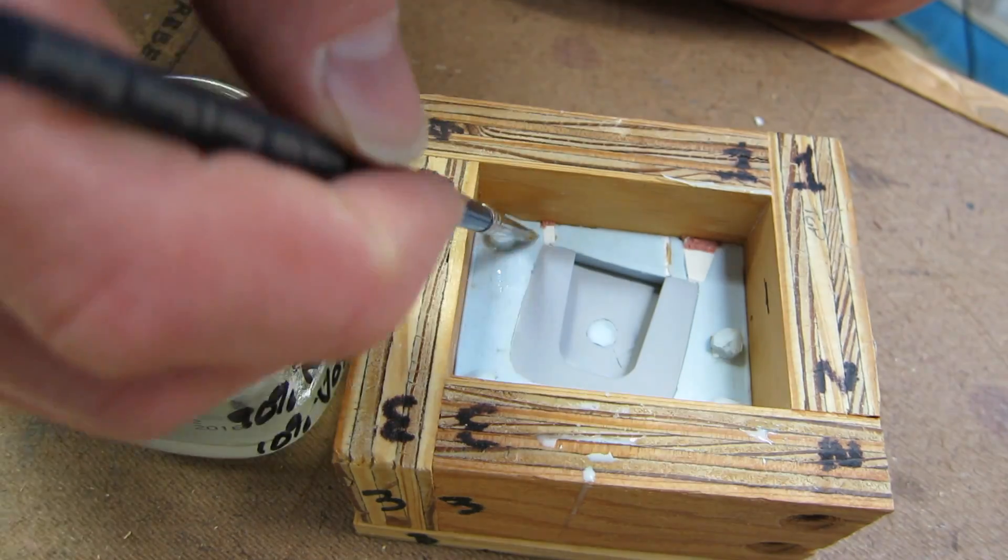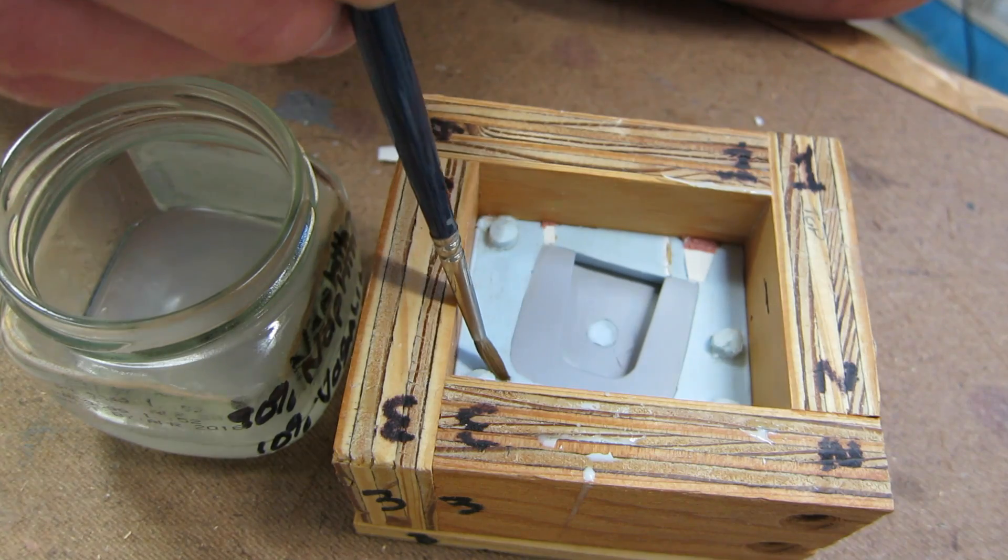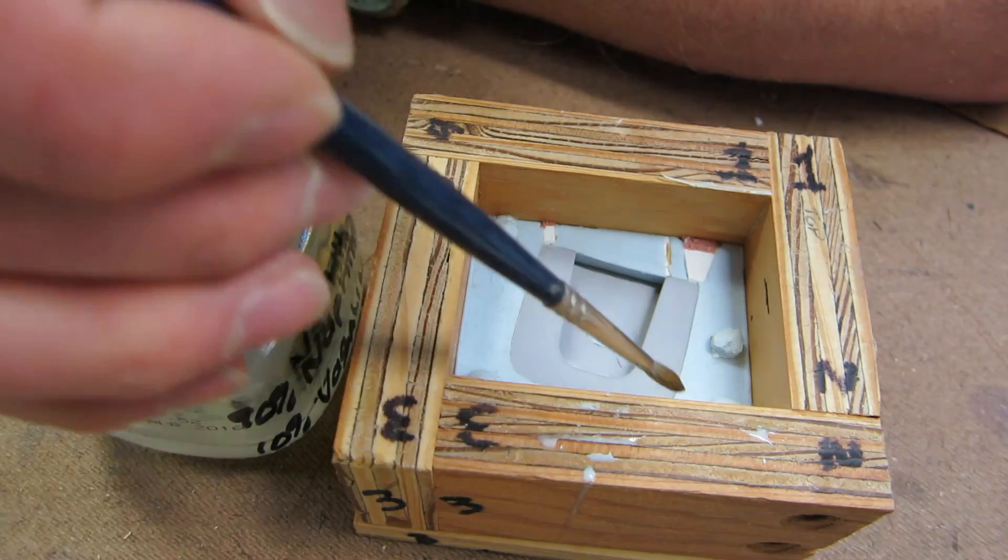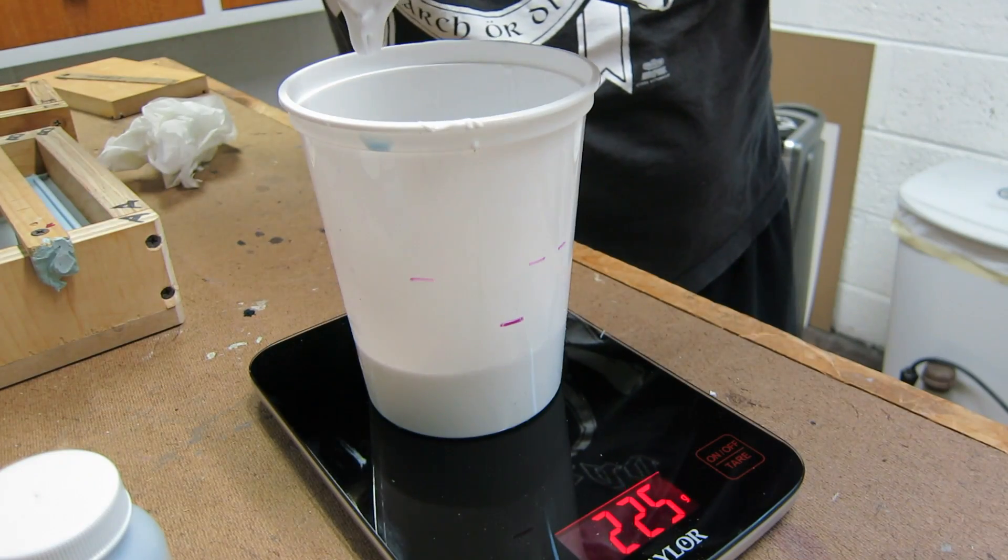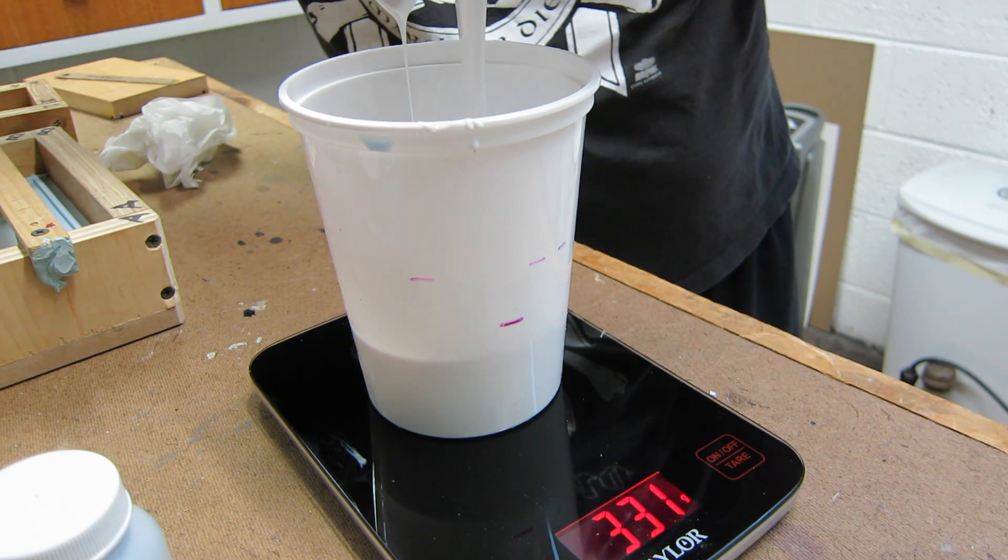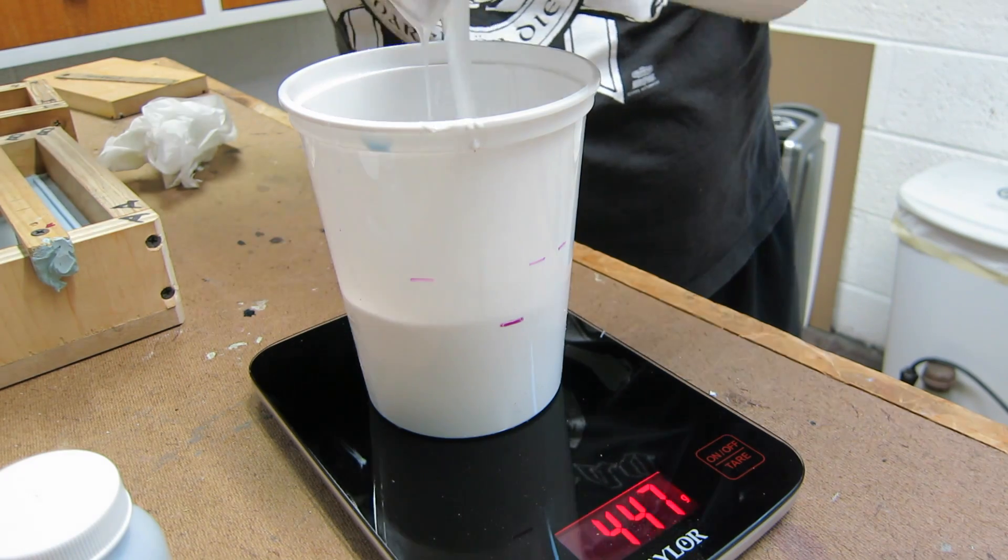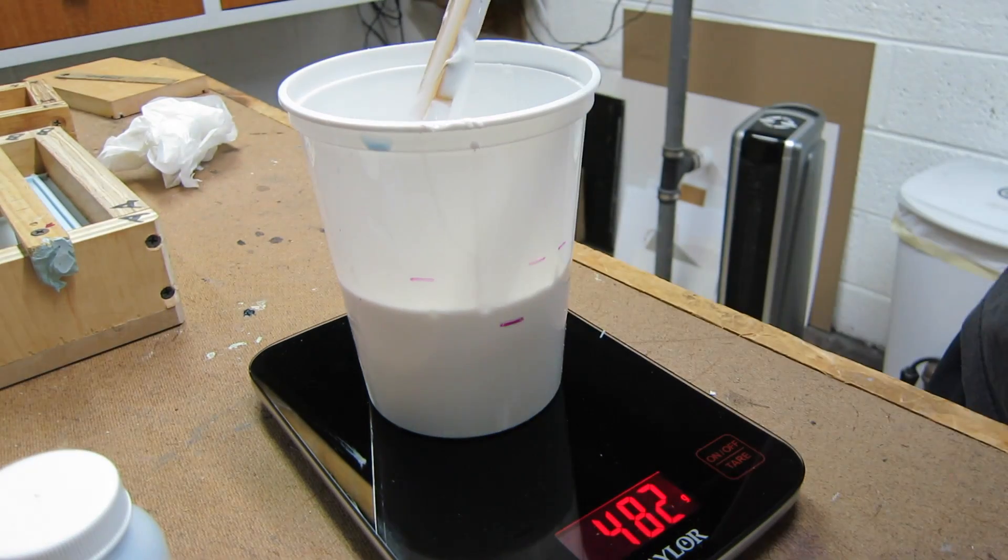I place the part back in the silicone and I'm applying some Vaseline that's been thinned down with naphtha here and this becomes my release agent because silicone only pretty much sticks to silicone and you want to make sure that your second half of your mold doesn't stick to the first half or it's really not going to work out for you.